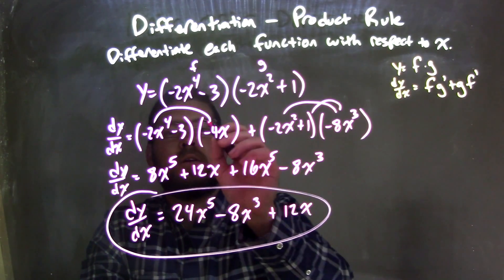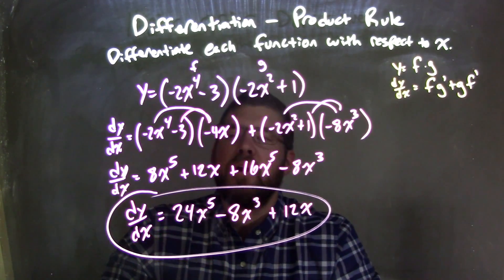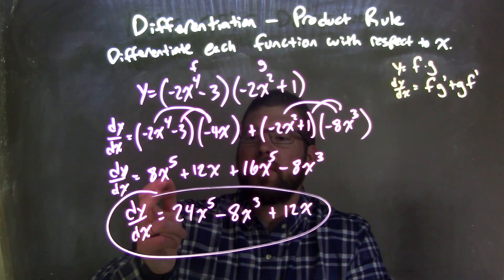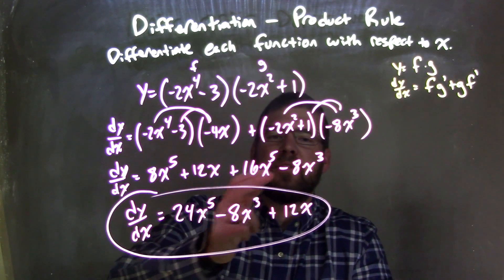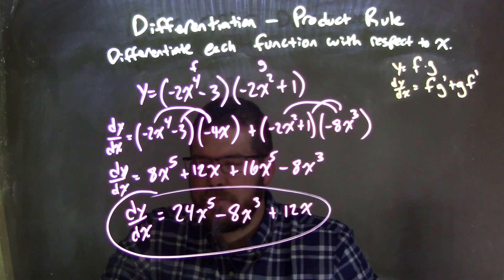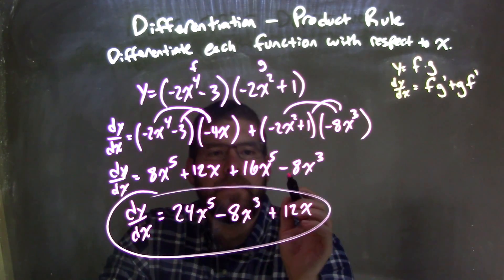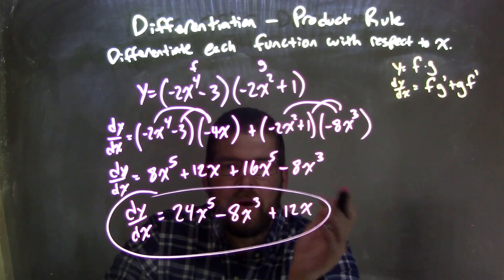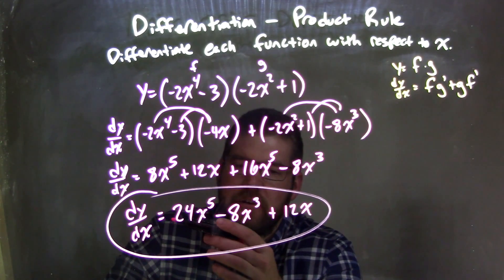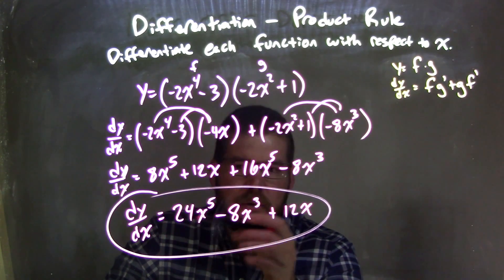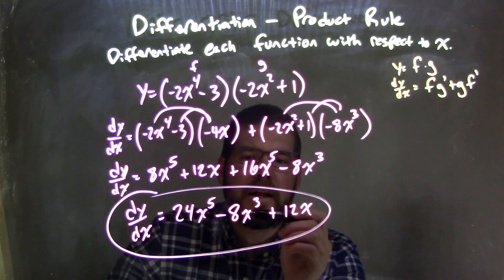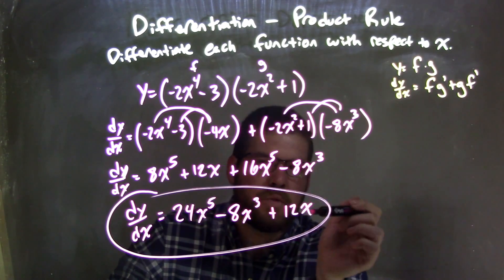Distributing out, leaving me with 8x to the 5th plus 12x plus 16x to the 5th minus 8x to the 3rd. I then simplify that a little more, bringing my highest degrees first, giving me my derivative, my final answer, dy/dx is equal to 24x to the 5th minus 8x to the 3rd plus 12x.